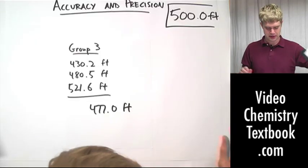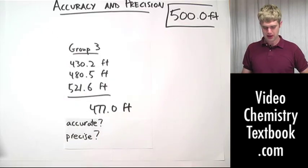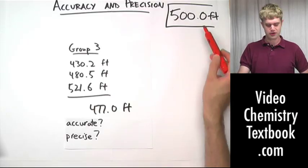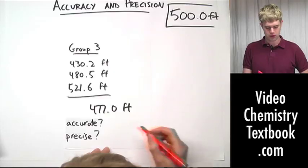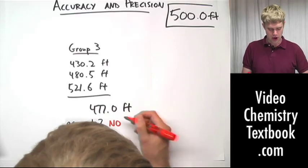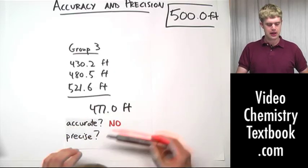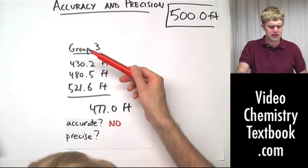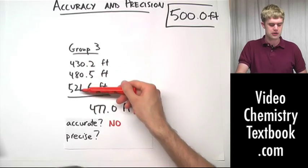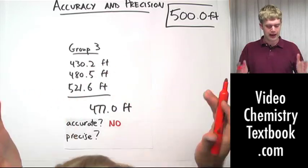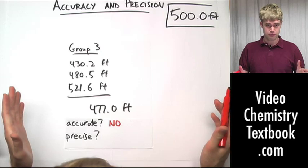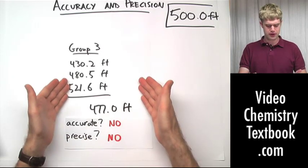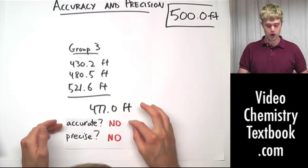Again, let's ask, is this accurate, and is it precise? If it were accurate, it would be right spot on to the actual value of 500.0. No, it's nowhere close. Accurate? No. And is it precise? How close, how internally consistent are each of the group's three measurements? Well, we have everything from 430 to 520. This is a 90-foot spread. Precise? Are they close together? Absolutely not. So group three's measurements are neither accurate nor precise.